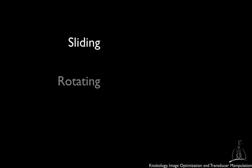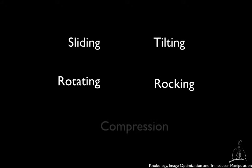Another essential component of the ultrasound examination is the correct transducer manipulation. According to the American Institute of Ultrasound and Medicine, we can identify five primary movements of the transducer: sliding, rotating, tilting, rocking, and compression.